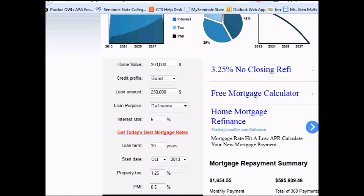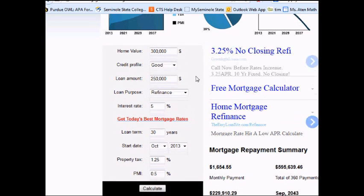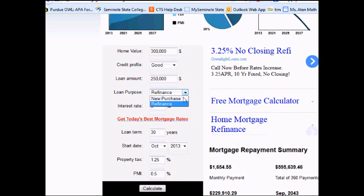We've got good credit. We're putting down $50,000, so our loan amount is $250,000. This is the part you would fill out over here. Like, if it's a new purchase, you put a new purchase. If it's a refinance, you put refinance.